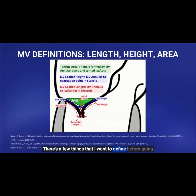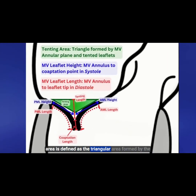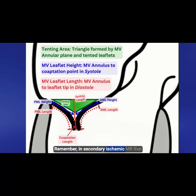There are a few things I want to define before going any further, to make sure we are all on the same page as far as terms for mitral valve assessment. The tenting area is defined as the triangular area formed by the mitral valve annular plane and those tenting leaflets. Remember, in secondary ischemic MR, that tenting area is predictive of repair failure.